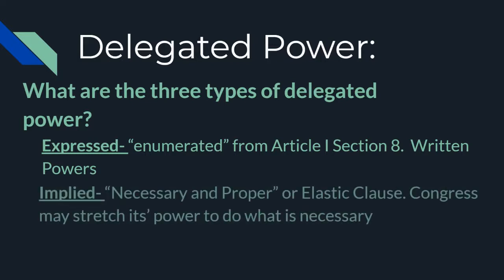Secondly, we have implied powers, and this is where our necessary and proper clause comes in, also called the elastic clause. These implied powers read between the lines — they make connections to the expressed powers. Anything reasonably connected to or discerned from our expressed powers falls within the bounds of our elastic clause. Congress can stretch its power, thinking of the elastic nature, to do what is necessary.